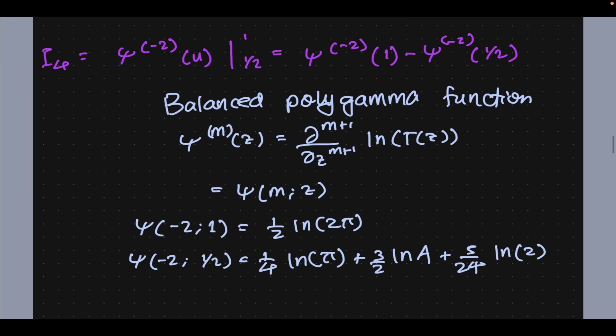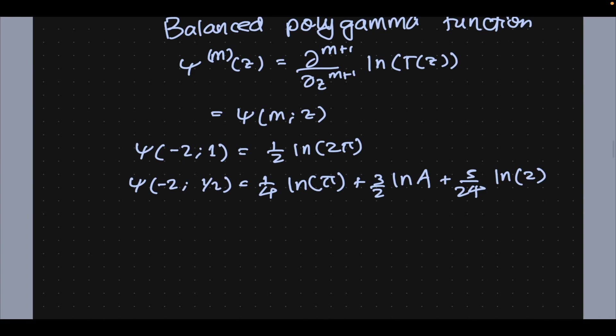5 over 24 with a natural log of 2. Well you guys might get some flashbacks to the Glaisher-Kinkelin constant. It was part of one of the earliest videos I made on the evaluation of a non-trivial infinite series.